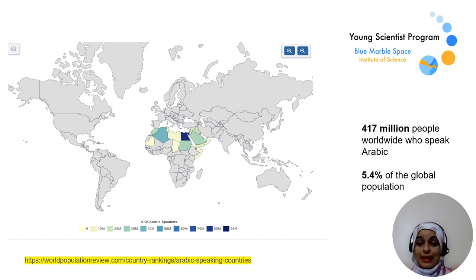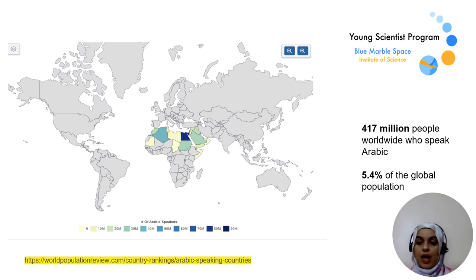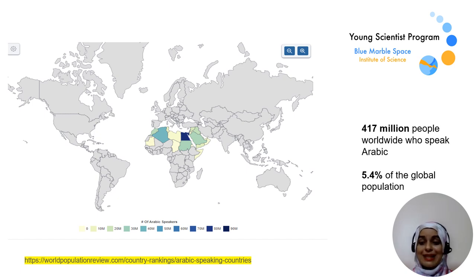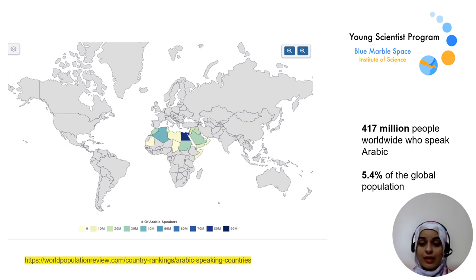Even when you input text in Arabic, these models often process the information internally in English, and this can result in the loss of cultural nuances and context sensitivity during translation or summarization. For example, Arabic translations often suffer from oversimplification or incorrect translations of scientific terms, making it harder and harder to communicate scientific ideas effectively across languages.